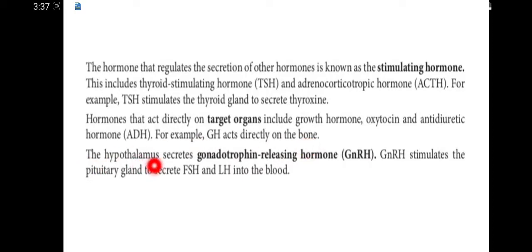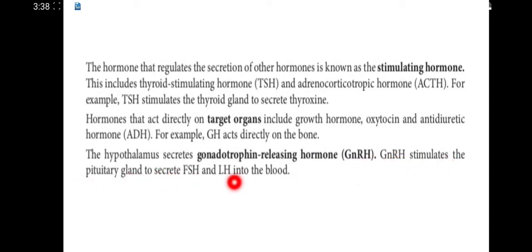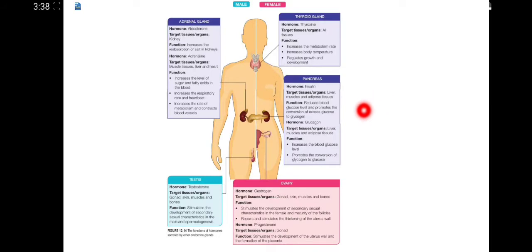The hypothalamus also secretes gonadotropin releasing hormone, GnRH. The GnRH stimulates the pituitary gland to secrete FSH (follicle stimulating hormone) and LH (luteinizing hormone) into the blood. This figure shows the functions of hormones secreted by other endocrine glands.